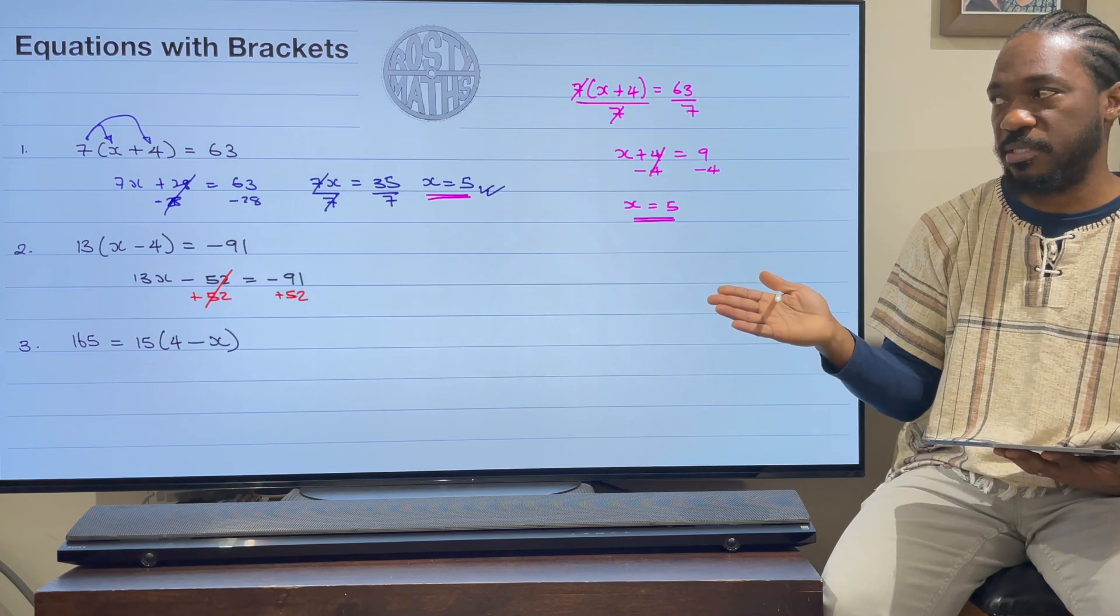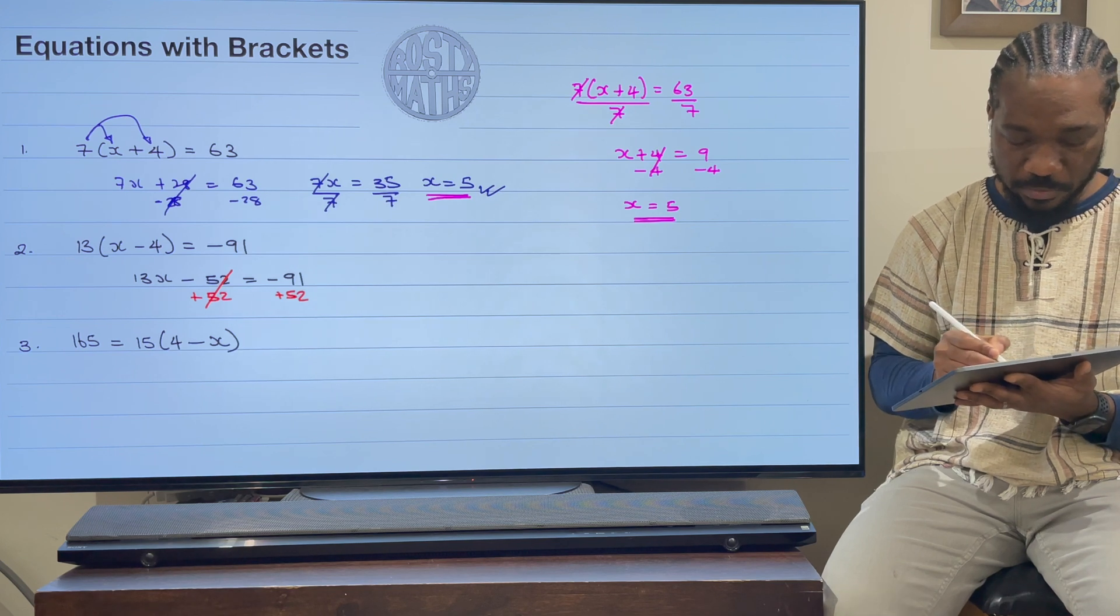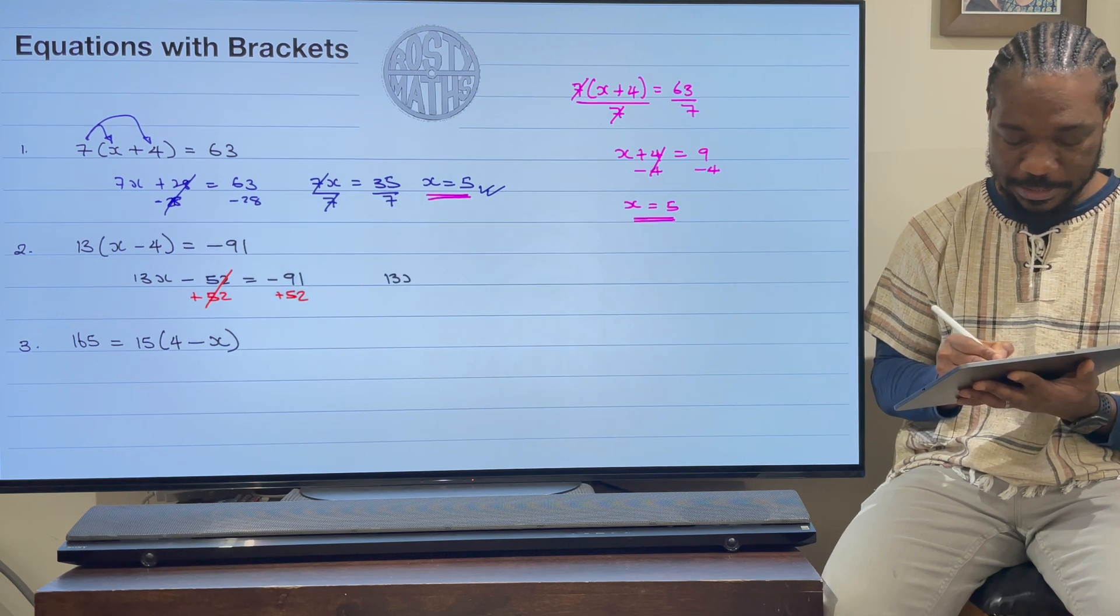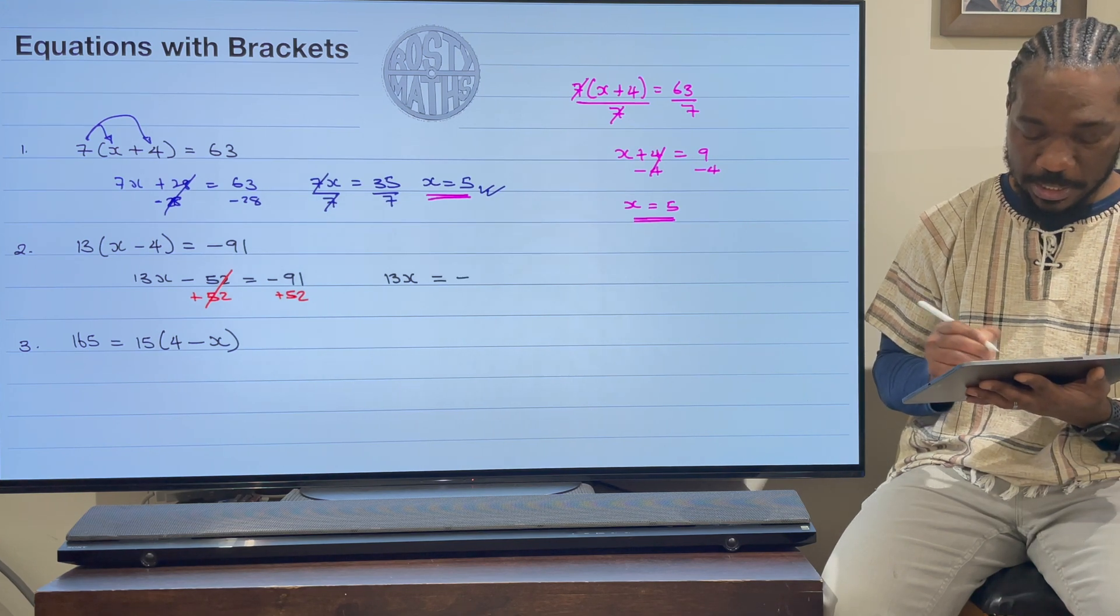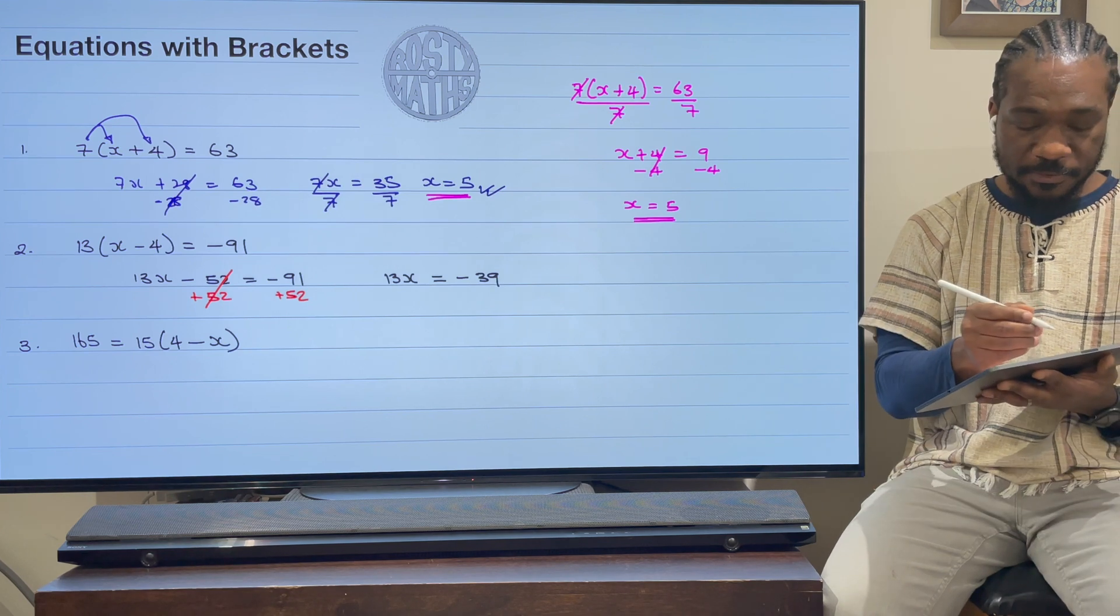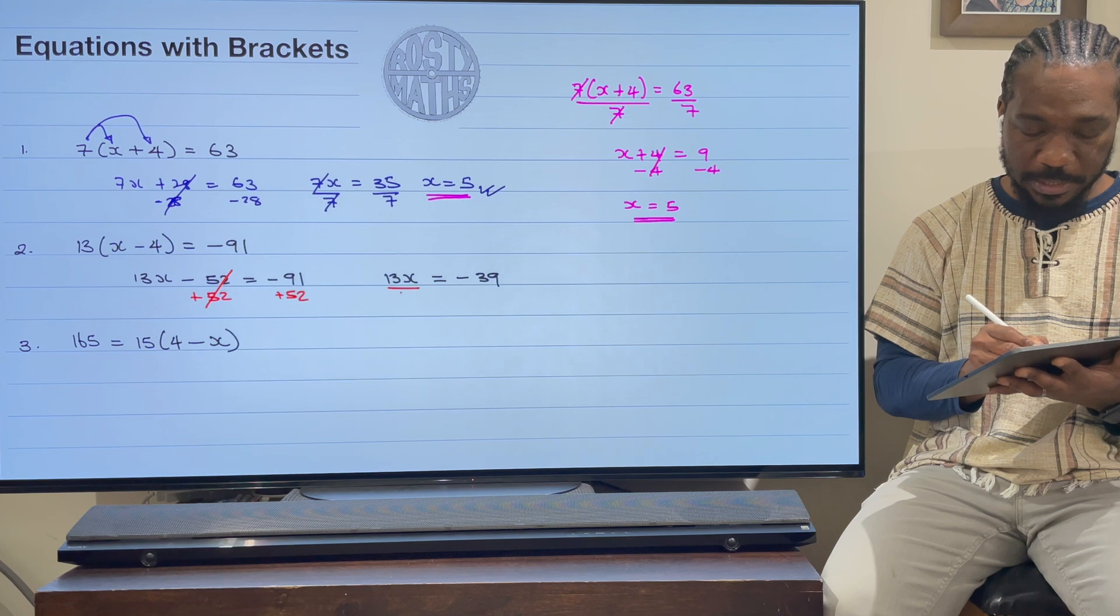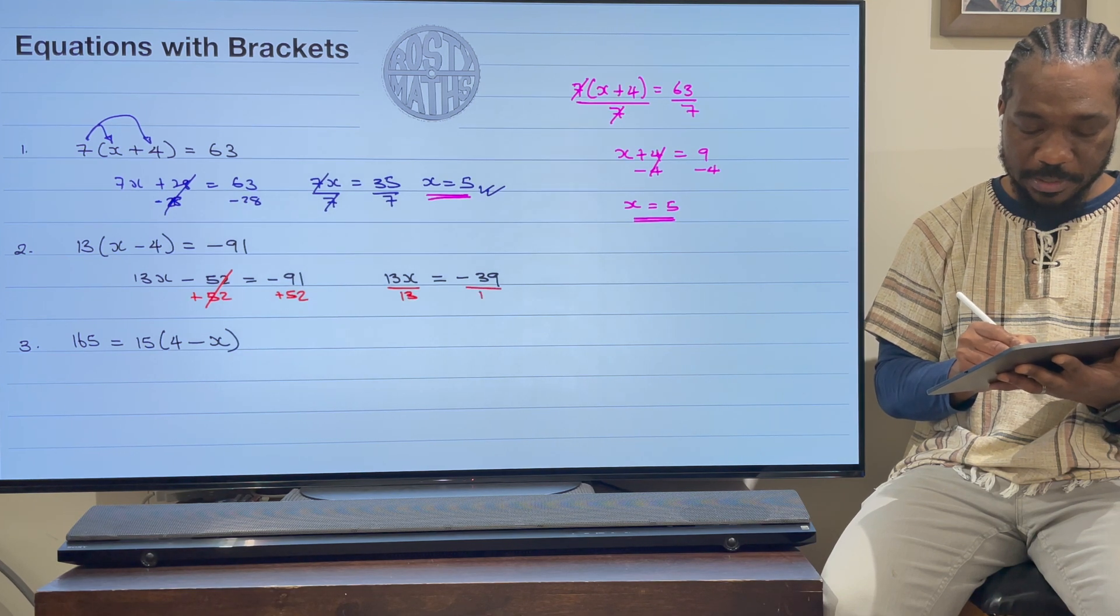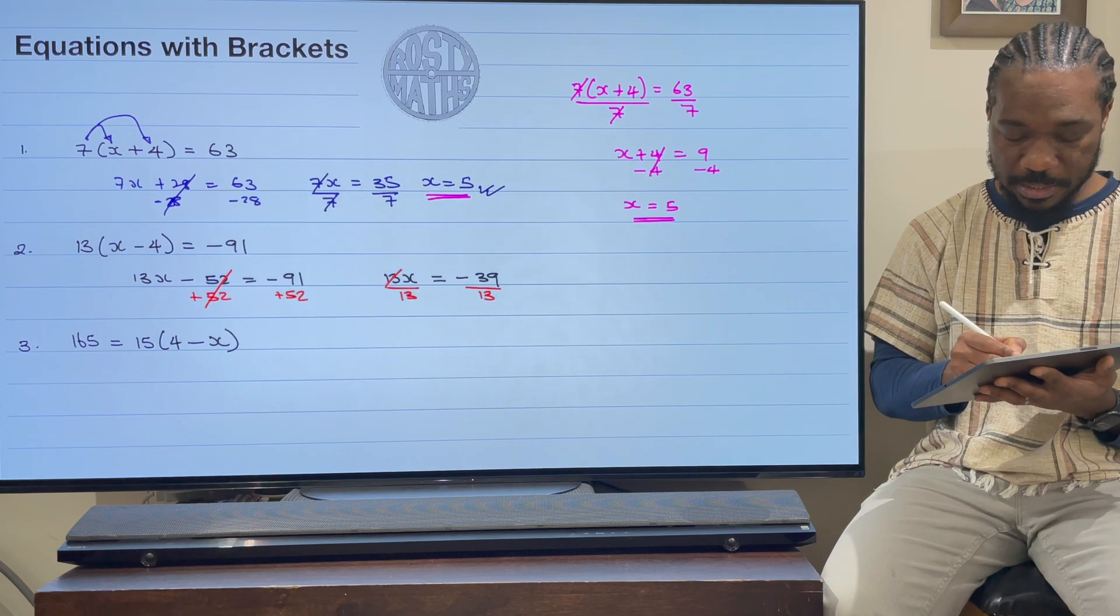But here you need to take away. So on the left-hand side then, I have only got 13x left, and then that's going to be equal to -39. And then to finish this off, then what we will do is we will divide by 13. That's the inverse operation. Divide by 13 there.